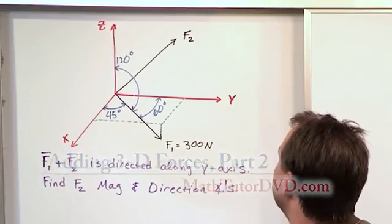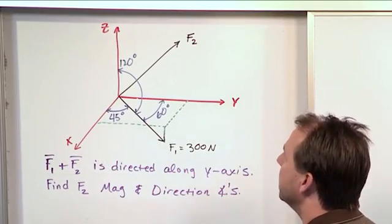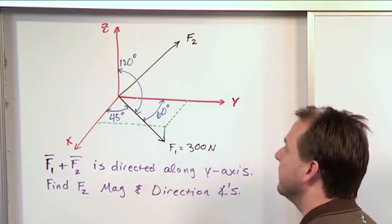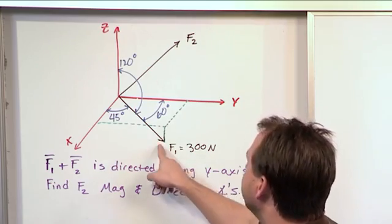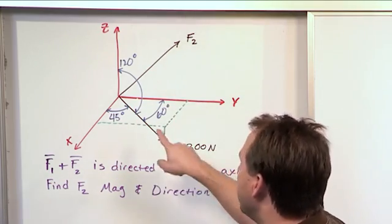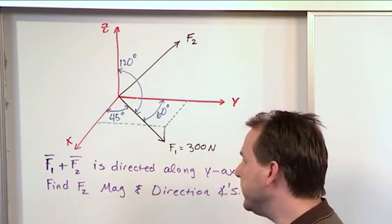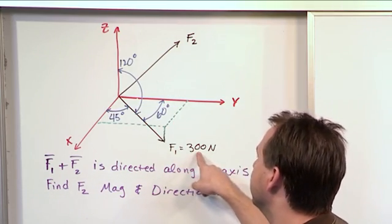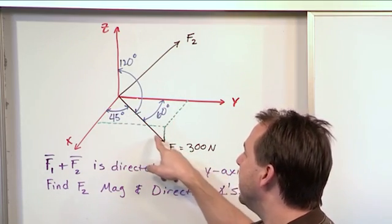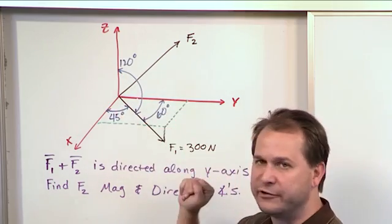So here's an interesting problem that trips a lot of people up, but it will not trip you up because we'll explain it very easily. We have two vectors, F1 and F2. We know everything there is to know about F1. We know its magnitude, which is 300 newtons. We also completely know its direction because we're given all of the direction cosines.